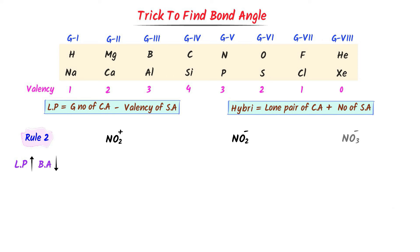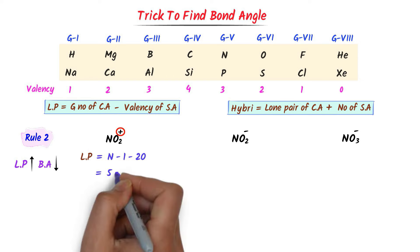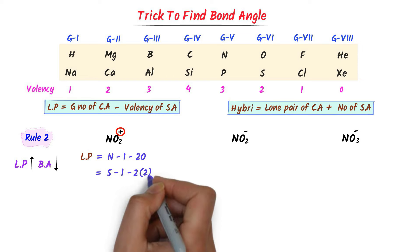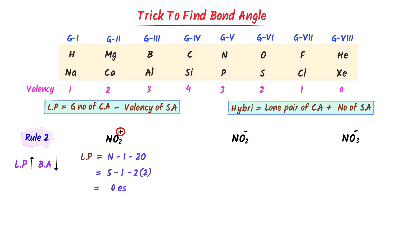Now consider these ions. For NO2+, the central atom is nitrogen (group 5). This positive charge means the ion has lost one electron, so I write minus 1. There are 2 oxygen atoms with valency 2. After calculation I get 0 electrons, so the lone pair is 0. Hybridization: 0 plus 2 surrounding atoms equals 2, meaning SP hybridization. The bond angle will be 180 degrees.